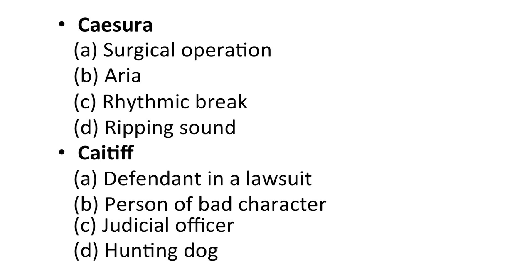Next word is caesura — is it A — a surgical operation, B — area (aria), C — rhythmic break, D — ripping sound? Now you have to understand what an aria is — A-R-I-A. Please understand, these are difficult to come across words, not difficult to understand, but difficult to come across.